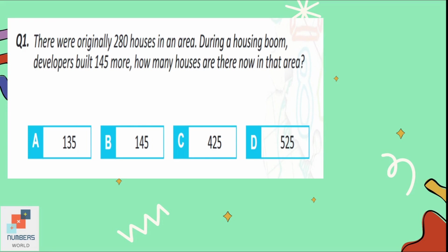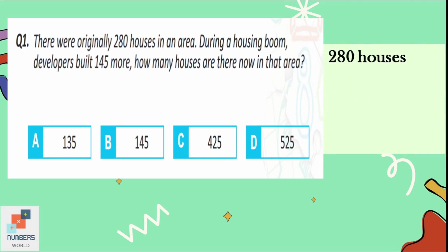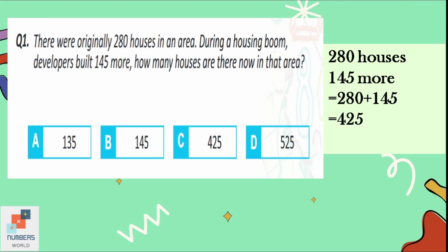Question number one: there are originally 280 houses in an area. During a housing development, developers built 145 more. How many houses are there now in that area? There were 280 houses already and 145 houses were built more. To find out the total, we will add the given numbers. The sum is equal to 425, so there are 425 houses in that area now. That is our option C.